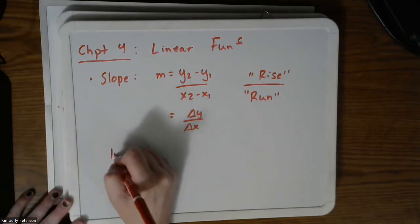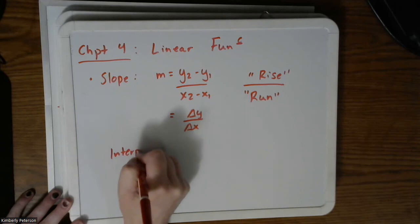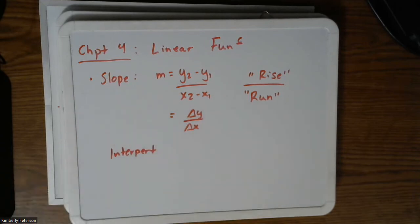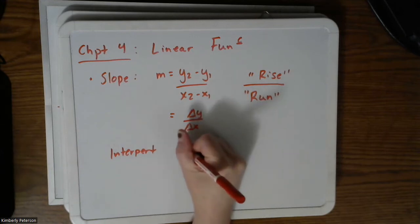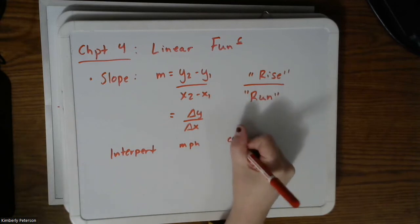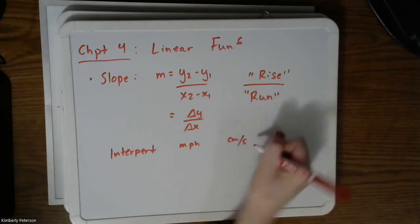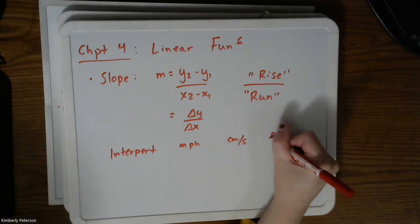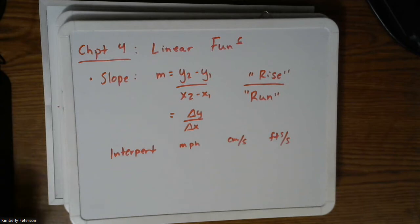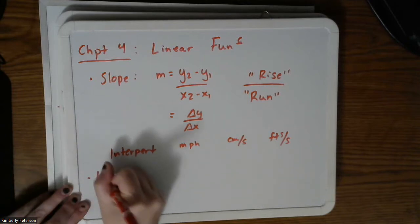And I also want you to be able to interpret a slope. So we looked at several examples when we were in, I think, section 4.1. So for instance, it might be something like miles per hour, or it might be centimeters per second, or cubic feet per second. So these are just some ideas of what a slope might look like.